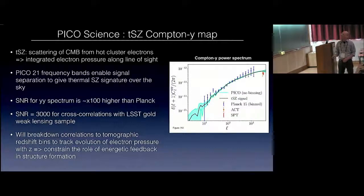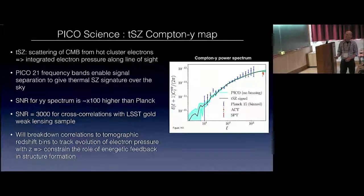The tSZ, the Compton-y map, will be mapped with very high precision. Here we show the Planck data points in blue. In green are l by l measurements, no binning, done with Pico. This will be the signal-to-noise with cross-correlation with LSST of 3000. And this will give a breakdown in correlation to tomographic redshift bins to track the evolution of electron pressure and constrain the role of energetic feedback in structure formation.